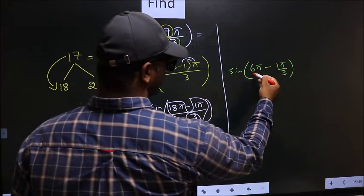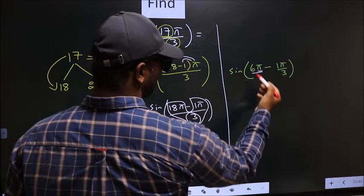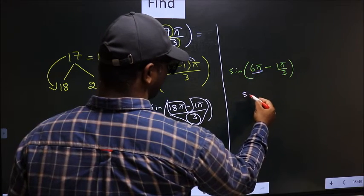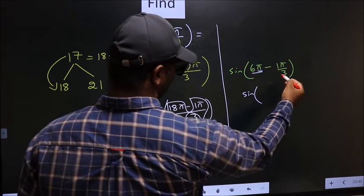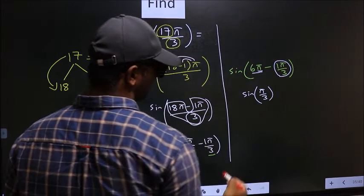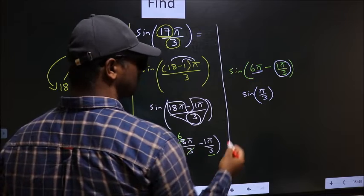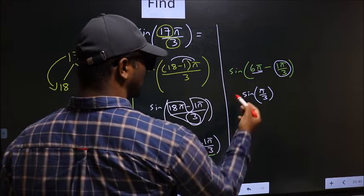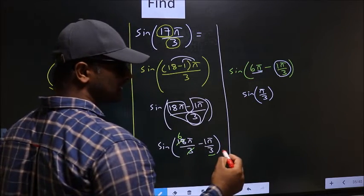Here we have multiple of pi. That means sine will remain sine of this angle you get here. Now the question arises, will we get plus here or minus? To answer that,